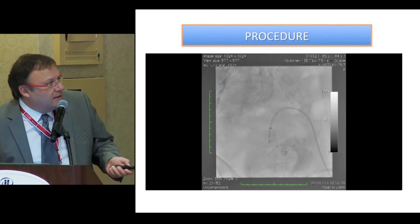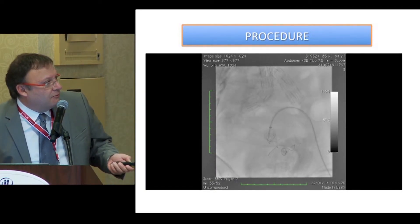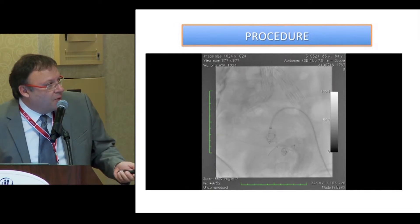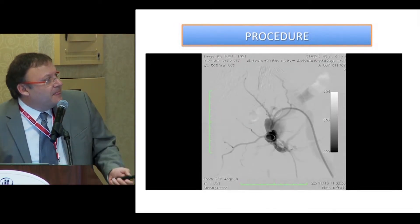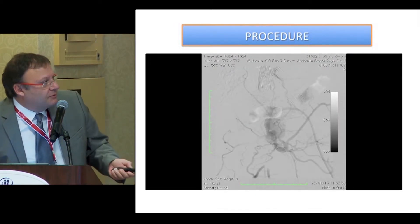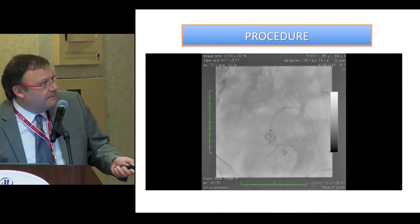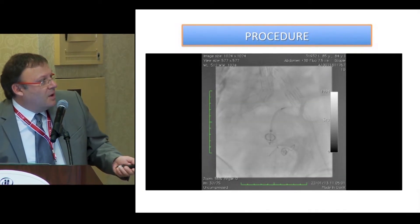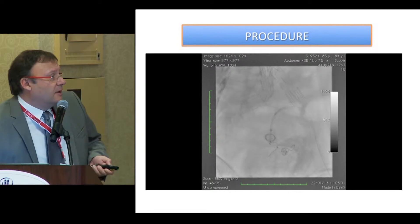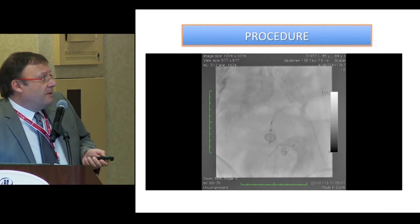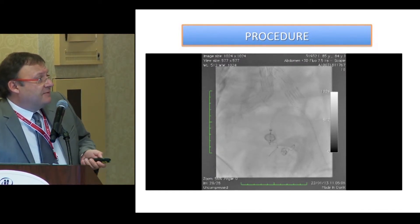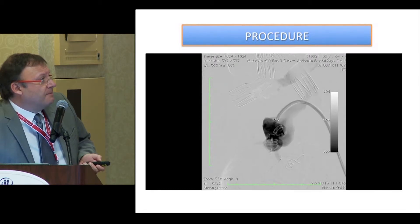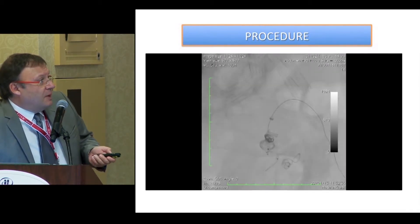We cannulated first from the ipsilateral groin and went very distally. We were able to deliver through the guidewire some coils. We added a short Amplatzer plug, and we still had some distal perfusion.